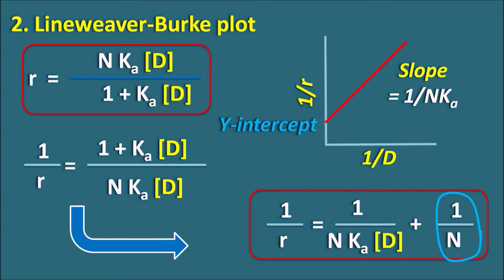This plot gives a straight line which is easy to study, but it still has one disadvantage. When we try to draw the data points, they are very close together, resulting in clustered data points within the plot, which is not practical and makes it difficult to draw the line easily. This is one disadvantage of the Lineweaver-Burk plot, which can be addressed with the next type of plot.